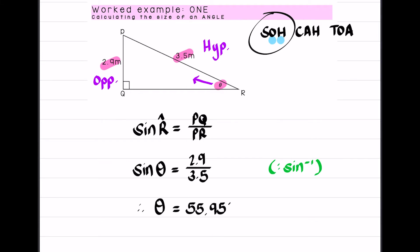Because it's an angle, and we want to round generally to one decimal place. Rounding 55.95 to one decimal place actually rounds to a whole number, so theta is therefore equal to 56 degrees.